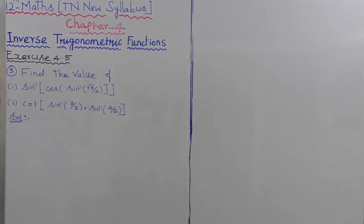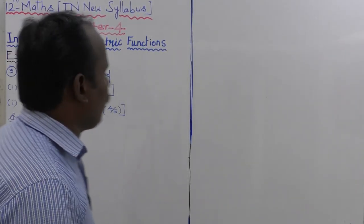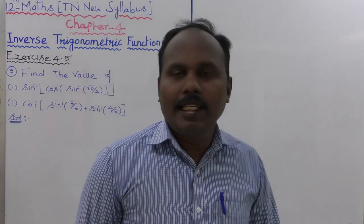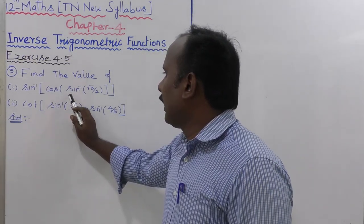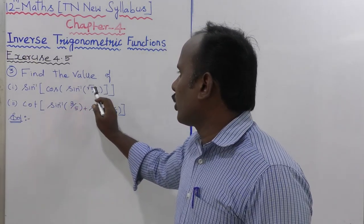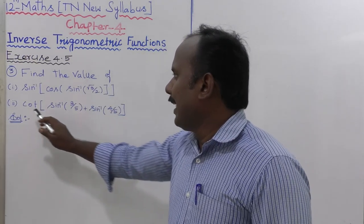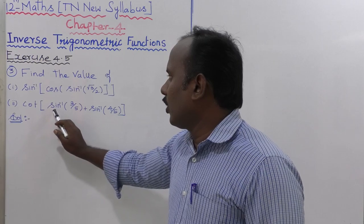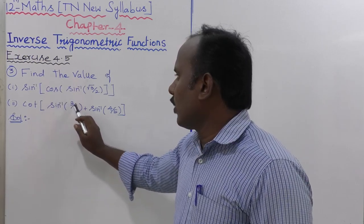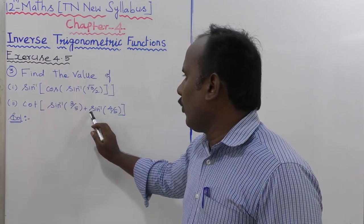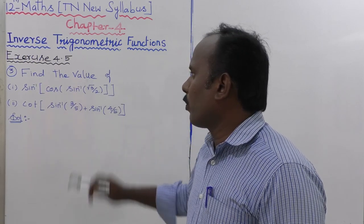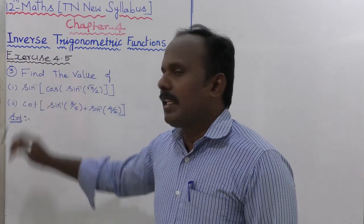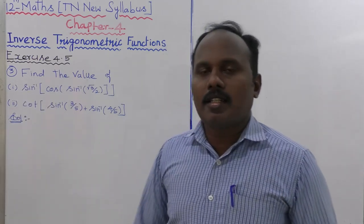Exercise 4.5, third sum: find the value of sin inverse of cos of sin inverse of root 3 by 2. Next: cot of sin inverse of 3 by 5 plus sin inverse of 4 by 5.